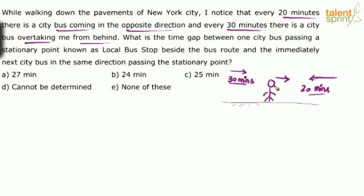One important point: we are talking about the same city buses — meaning similar buses. So the speed of the buses coming in the opposite direction and those coming from behind would be the same. Though it is not mentioned explicitly, it has to be taken for granted because we are talking about city buses.